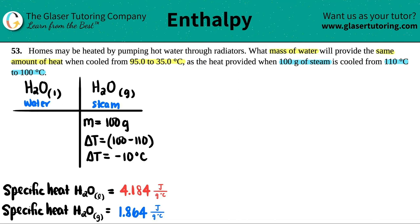Now what else did they say? We know the delta T for the water. They said what mass of water will provide the same amount of heat when cooled from 95 to 35. We have a delta T here - 35 minus 95 equals negative 60.0 degrees Celsius. Do we know the mass of the water? No, this is what we're solving for. This is what the question is asking for.